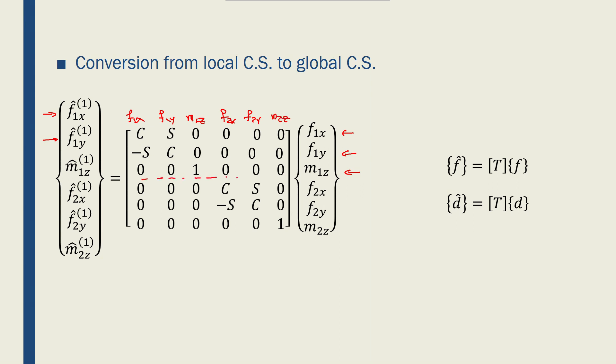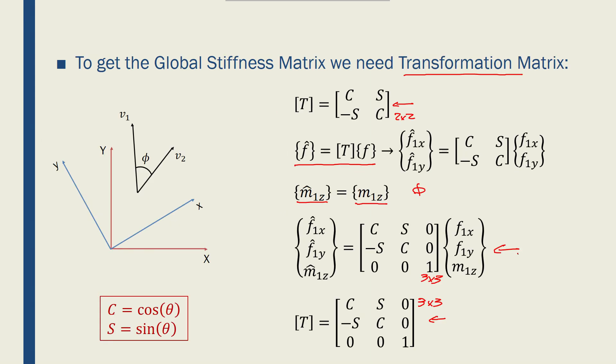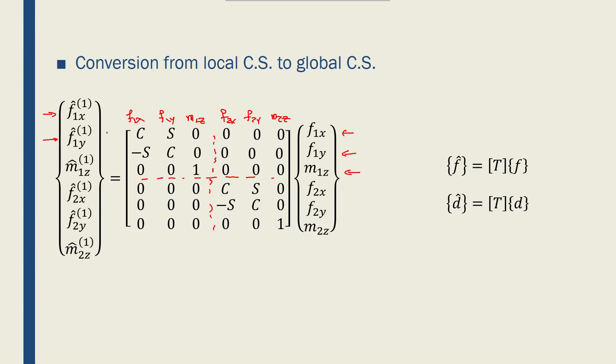Let me divide this into four 3 by 3s. By taking a look at this relationship between the forces in local and global, you can figure out how I made this matrix. This portion, portion 1, relates the forces for node 1 to forces for node 1 in global coordinate system. And this portion, which I'll call 4, would be the same thing but for the second node of the element.